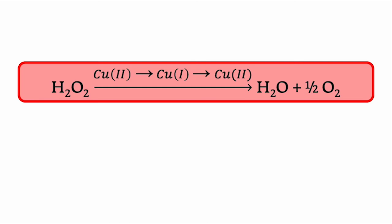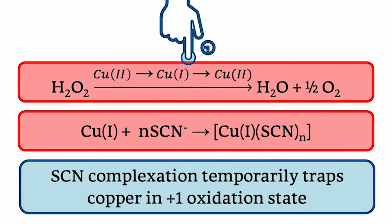Another such example is the Orban oscillator, where copper ions catalyze the decomposition of hydrogen peroxide, but also get trapped in the plus one oxidation state by complexation by thiocyanate ions in the solution to produce a slightly yellow complex.